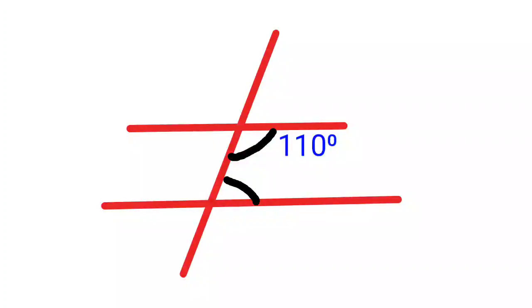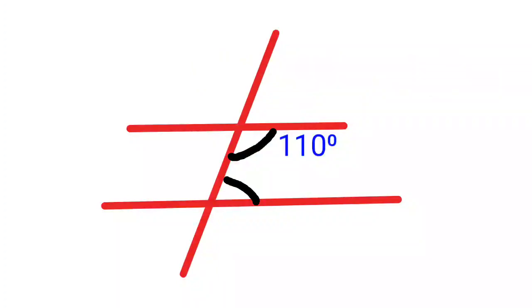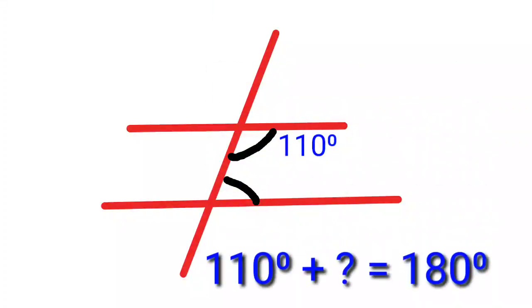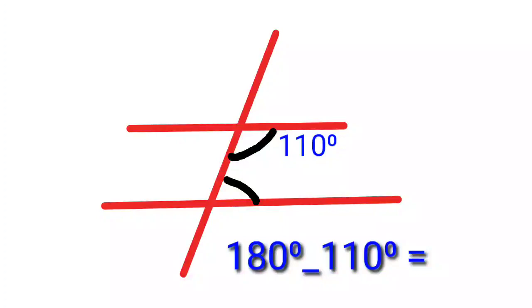Here you can see two parallel lines and another line cuts across them, and one angle is given as 110 degrees. Can you find out the other marked angle? You can see the marked angles are co-interior angles, and co-interior angles are supplementary — their sum is 180 degrees. So the missing angle is 180 minus 110, which equals 70 degrees.